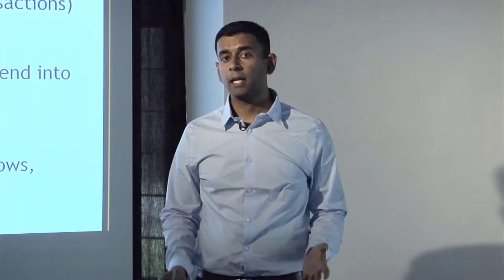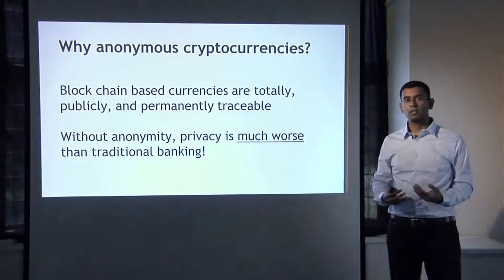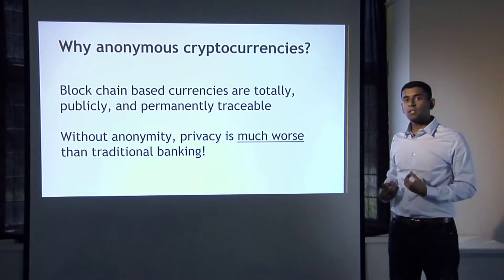Let's talk about the ethics of anonymity. In blockchain-based currencies, all transactions are recorded on the ledger — totally, publicly, and permanently traceable. If your identity ever gets linked to these transactions, your privacy level is much worse than with traditional banking, because anybody might carry out a de-anonymization attack, not just a company or government. Your loss of anonymity years down the line could affect all your transactions today. We really want anonymity to even get the privacy level of cryptocurrencies up to what we enjoy with the traditional system.